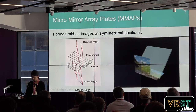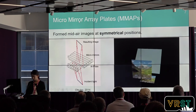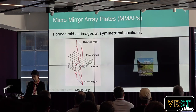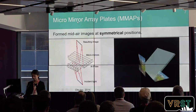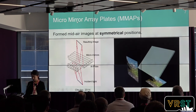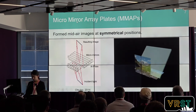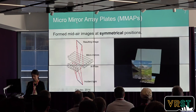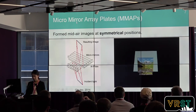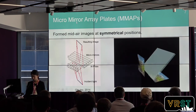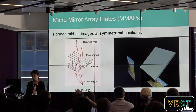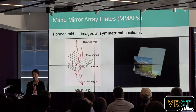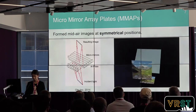MMAPS consists of two layers of micro-mirrors which are orthogonal to each other. The incident light is reflected once in each layer of the MMAPS. The MMAPS can form a mid-air image at the position that is plane-symmetrical to the MMAPS.